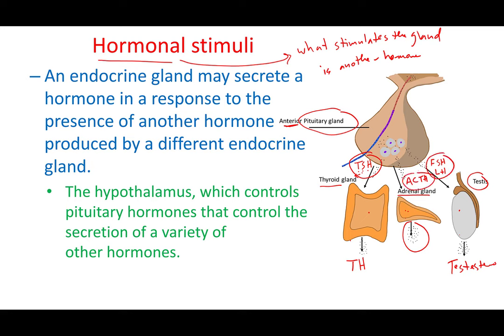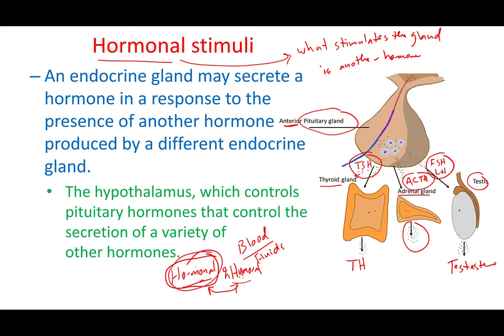This hormone is typically delivered through the blood. So what is the difference between hormonal and humoral stimuli? Technically, hormonal stimuli is a subtype of humoral — it is delivered through the body's fluids. The distinction is that the stimulus is a hormone secreted by a gland, rather than a chemical like glucose. That's why we call it hormonal stimuli. The following video will start talking about the pituitary gland.